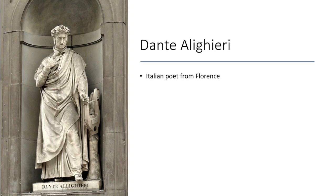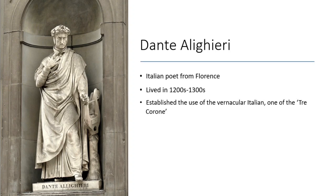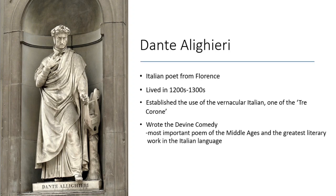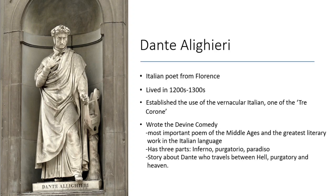What can we say about Dante? He was an Italian poet from Florence who lived in the 1200s to 1300s. What was significant about him? He established the use of the vernacular Italian, and he was also one of the tre corone — or three crowns — of Italian literature. The most important book he wrote was the Divine Comedy, which was the most important poem of the Middle Ages and the greatest literary work in the Italian language. The Divine Comedy has three parts — Inferno, Purgatorio, and Paradiso — and it's about Dante traveling between hell, purgatory, and heaven, symbolic of the soul's journey to God.